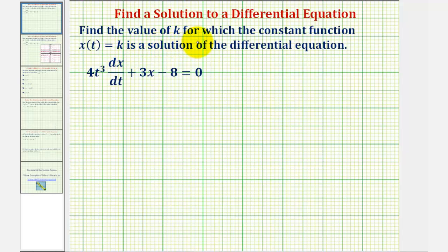We want to find the value of k for which the constant function x(t) = k is a solution of the differential equation 4t³(dx/dt) + 3x - 8 = 0.